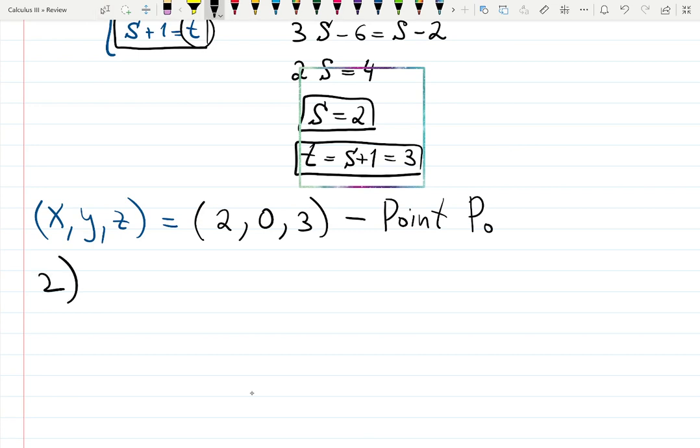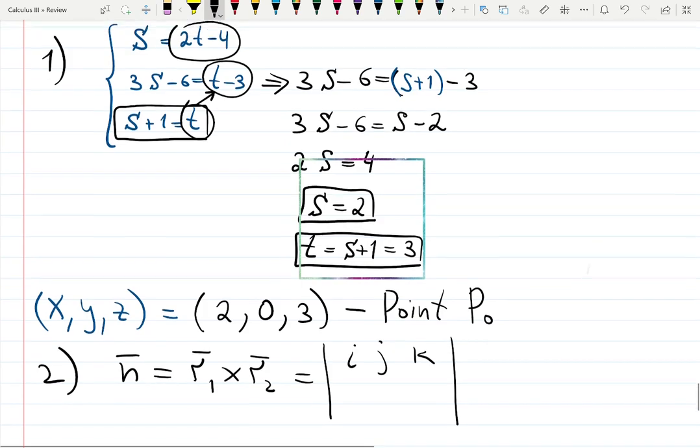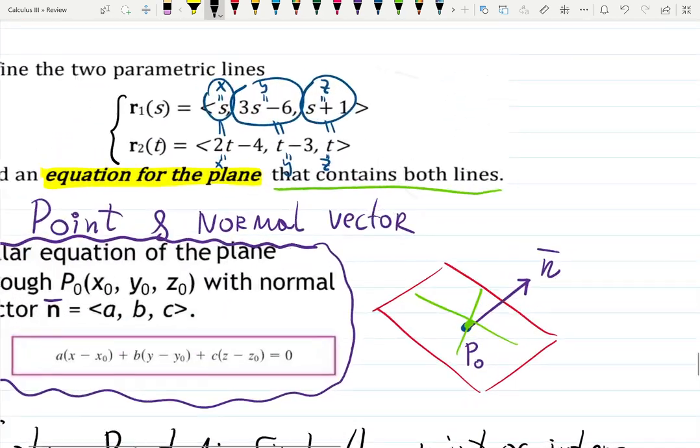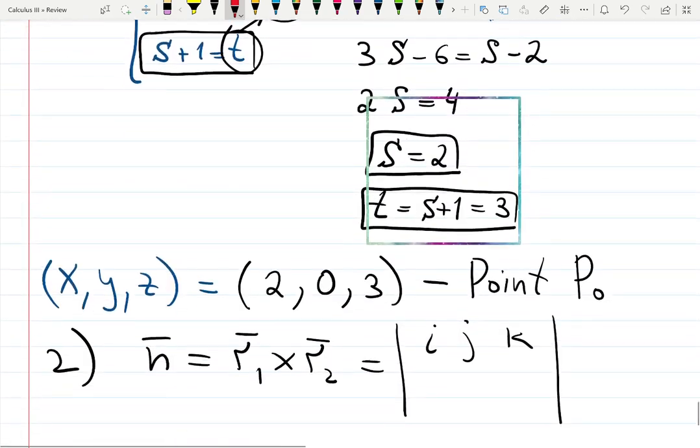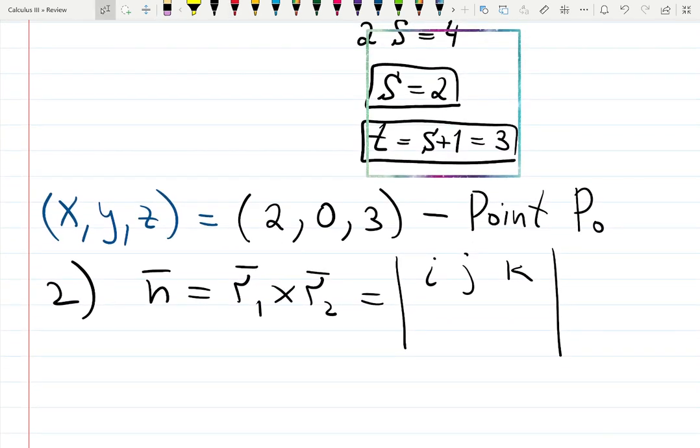So step 1 is done. Step 2: you have the point but we don't have a normal vector. Normal vector can be found as a cross product of r₁ and r₂ vectors. Let's perform ijk determinant and then write it down. Looking at the parametric lines, we only need to use these parts that are multiplied by s's and t's. So ⟨1, 3, 1⟩ and ⟨2, 1, 1⟩.